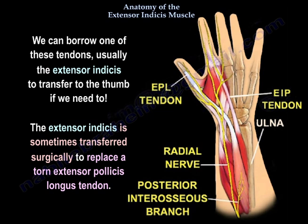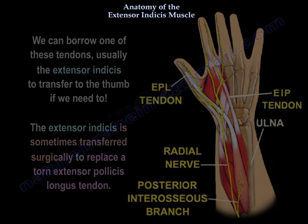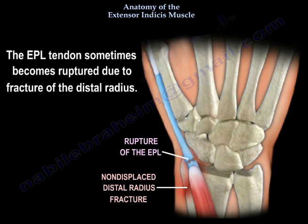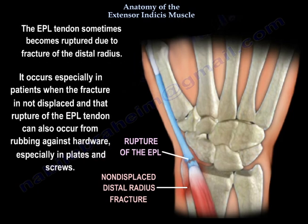The extensor indicis tendon is sometimes transferred surgically to replace a torn extensor pollicis longus tendon. The extensor pollicis longus tendon can become ruptured due to fracture of the distal radius, especially when the fracture is not displaced, or from rubbing against hardware such as plates and screws.